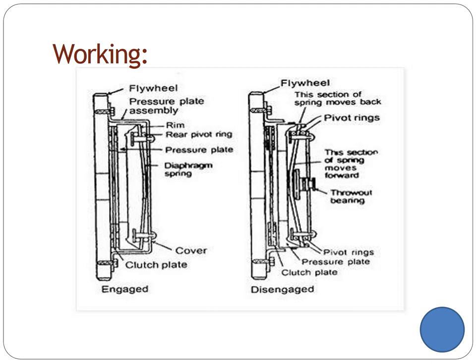When the pedal is depressed, the linkage moves the release bearing toward the flywheel to disengage the clutch. As the bearing contacts the inner position of the conical springs, it moves the position forward, causing the link to move downward. The conical shape springs push the thrust bearing forward, creating an interrupt between the pivot ring and pressure plate. If the pivot ring and pressure plate disengage, the clutch is disengaged, and the crankshaft runs without rotating the clutch plate.